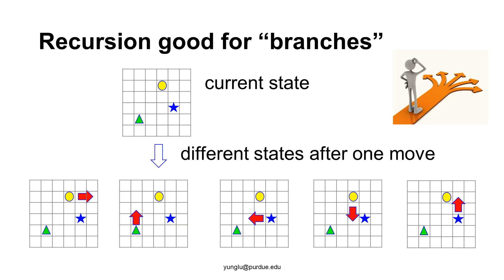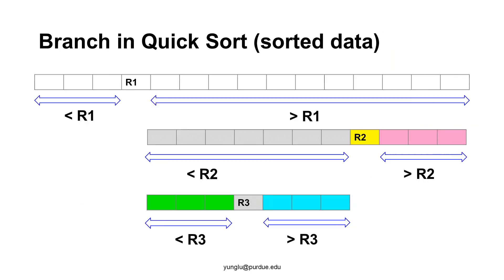Recursion is particularly good for solving problems that have branches. Think about the board game — there are several options for the player, and each move leads to a different game. Recursion is especially helpful when we do not know the number of options in advance. As the game progresses, sometimes there are more options and sometimes fewer. QuickSort is another example: after breaking the array into three parts, the algorithm has to sort the first and third parts — a two-way branch.